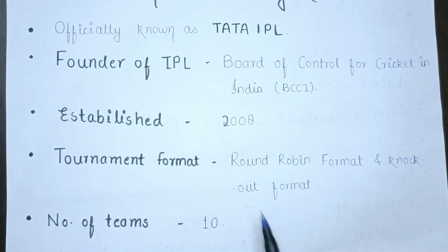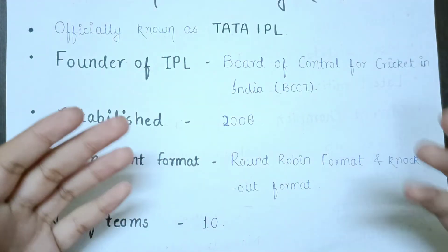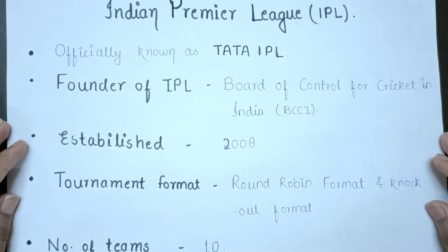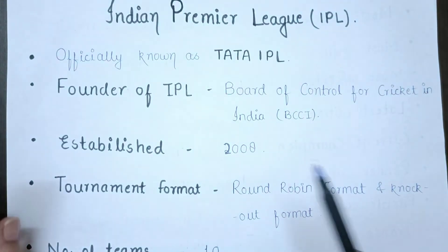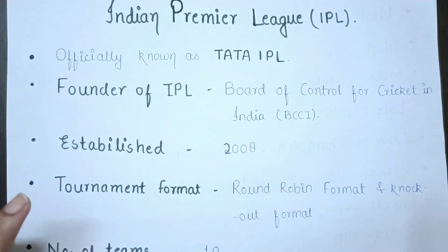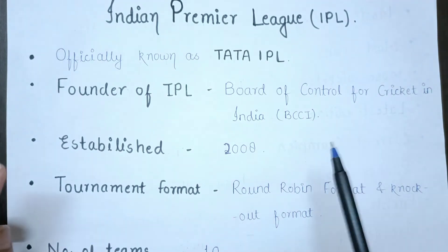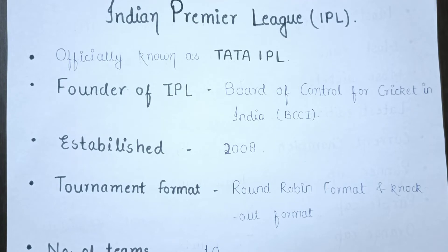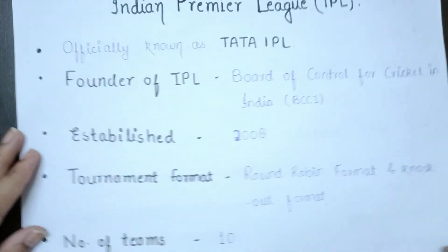In a knockout format, a certain number of matches are played, and in a round robin or league tournament, matches can be single or double. To recap: IPL full form is Indian Premier League, officially Tata IPL, founded by BCCI, first edition in 2008, format is round robin and knockout, number of teams is 10.